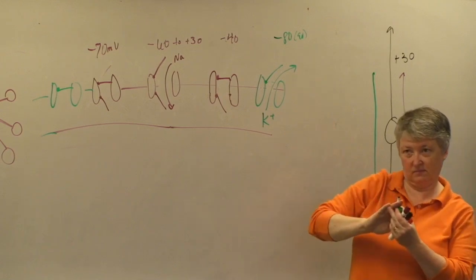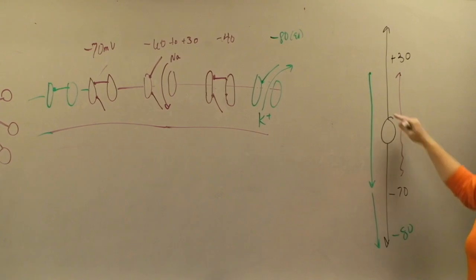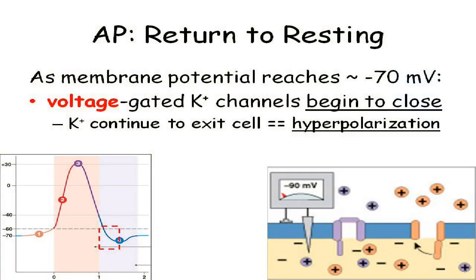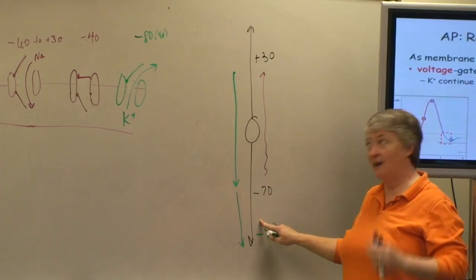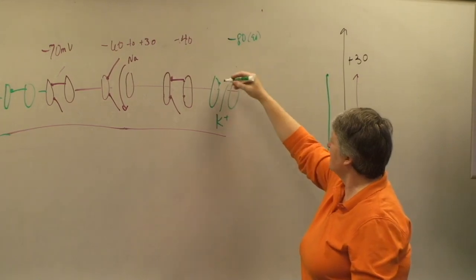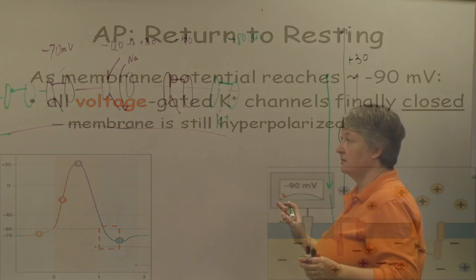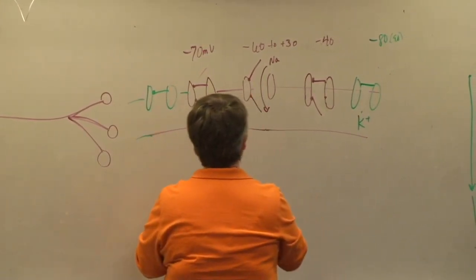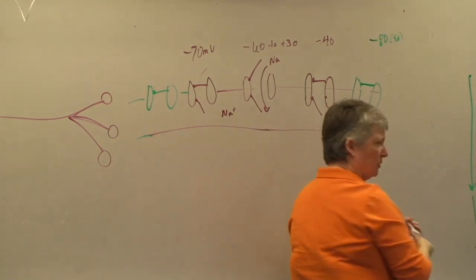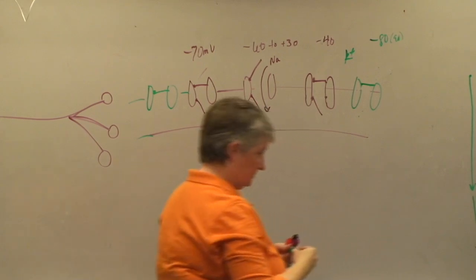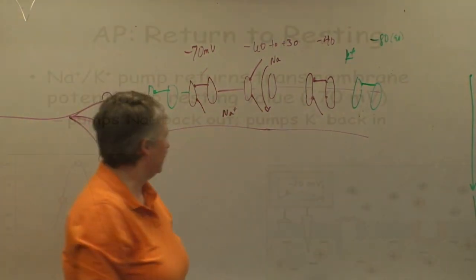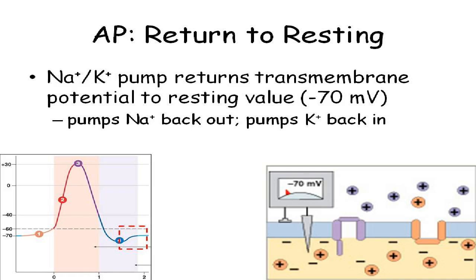If the cell repolarizes and because the potassium channels stay open past the resting membrane potential, we say the cell hyperpolarizes — it gets more negative than resting. At about minus 80 to minus 90, the potassium channels close. Once everything resets, the sodium-potassium pump catches up, pumping sodium out and potassium back in. This is what happens at the initial segment during an action potential.